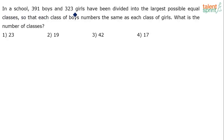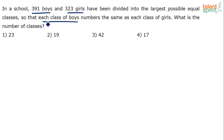In a school, 391 boys and 323 girls have been divided into the largest possible equal classes, such that each class of boys numbers the same as each class of girls. Each class of boys numbers the same as each class of girls means the number of boys in each class is equal to the number of girls in each class.